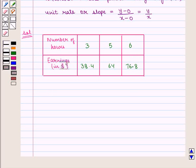Now, let us see each ratio. That is Earnings upon number of hours. And we get Earnings, that is 38.4 by 3, which is equal to 12.8.